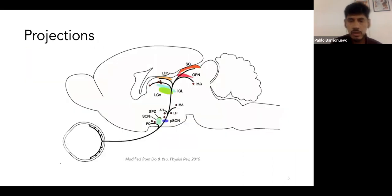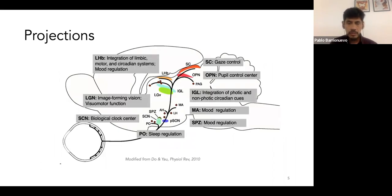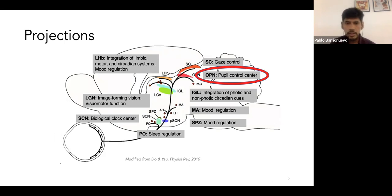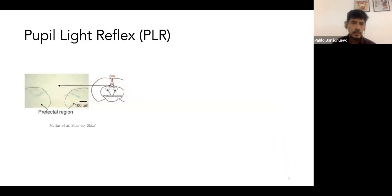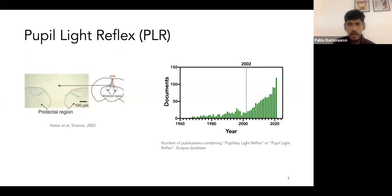IPRGCs receive inputs from amacrine and bipolar cells. Their projections go to different brain centers, and we are interested in one: the olivary pretectal nucleus, which is a brain center that controls the pupil light reflex. The first report of projections from IPRGCs to the olivary pretectal nucleus was in 2002, and since then the number of publications related to the pupillary light reflex has increased throughout the years.